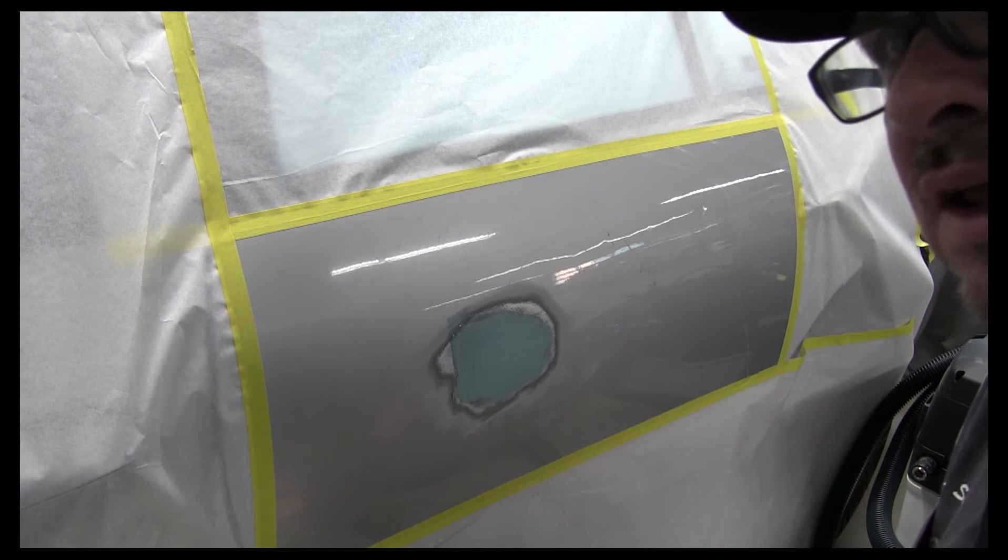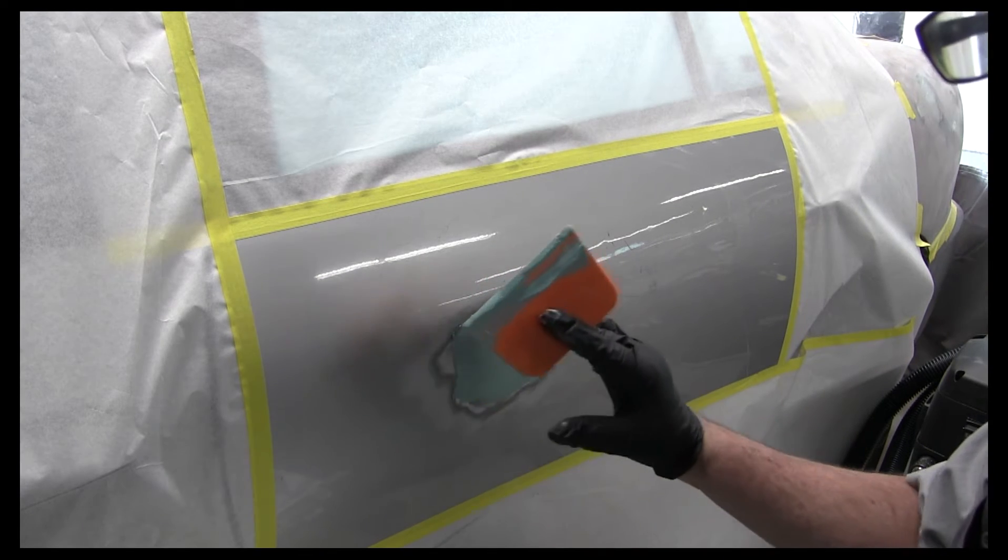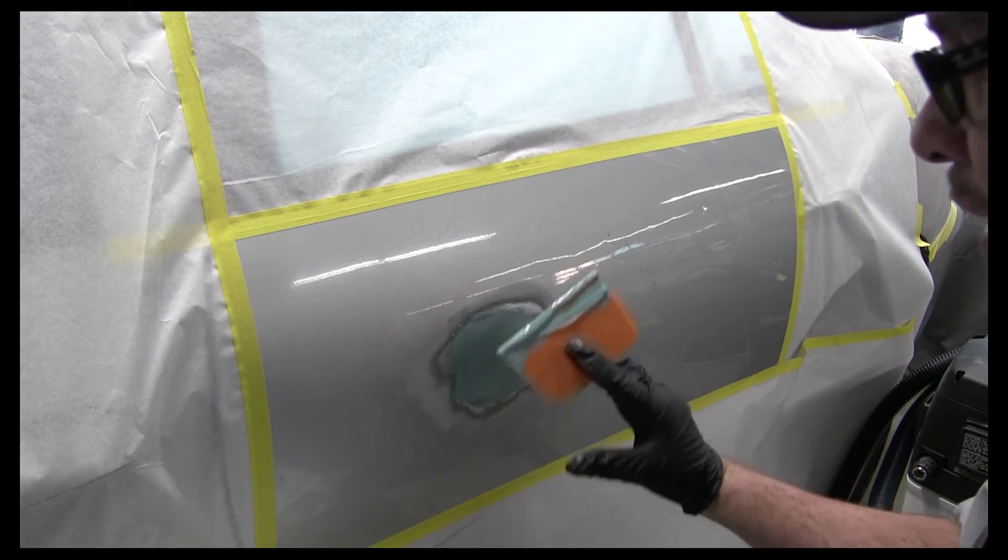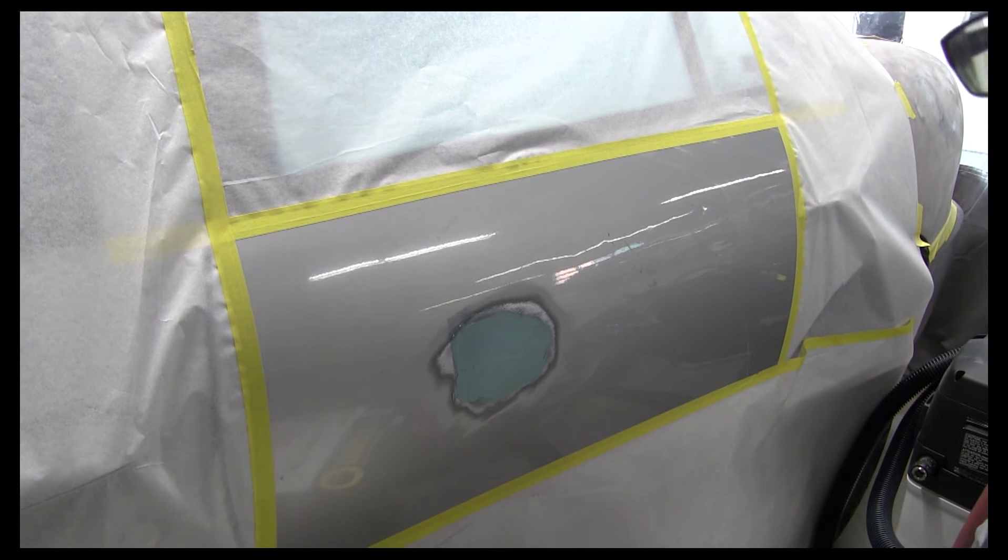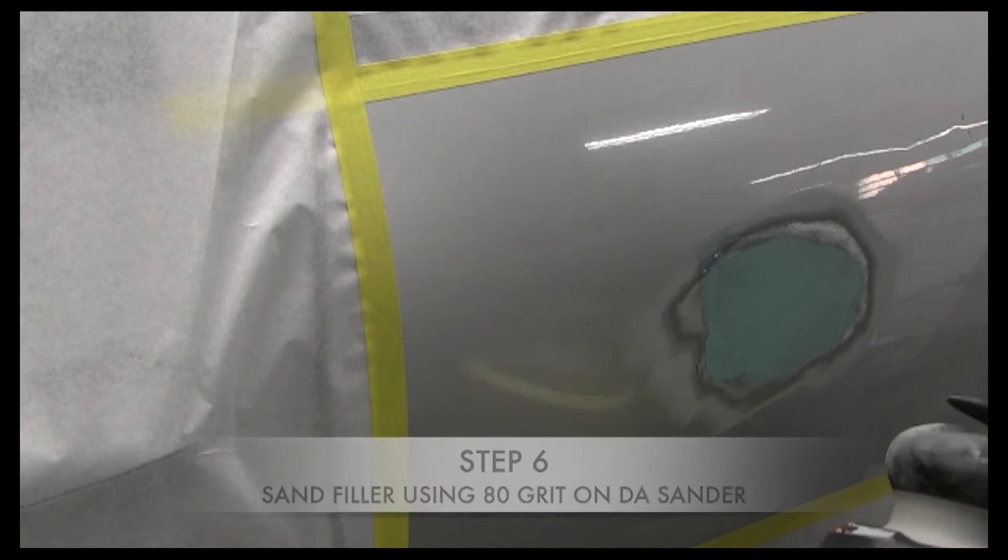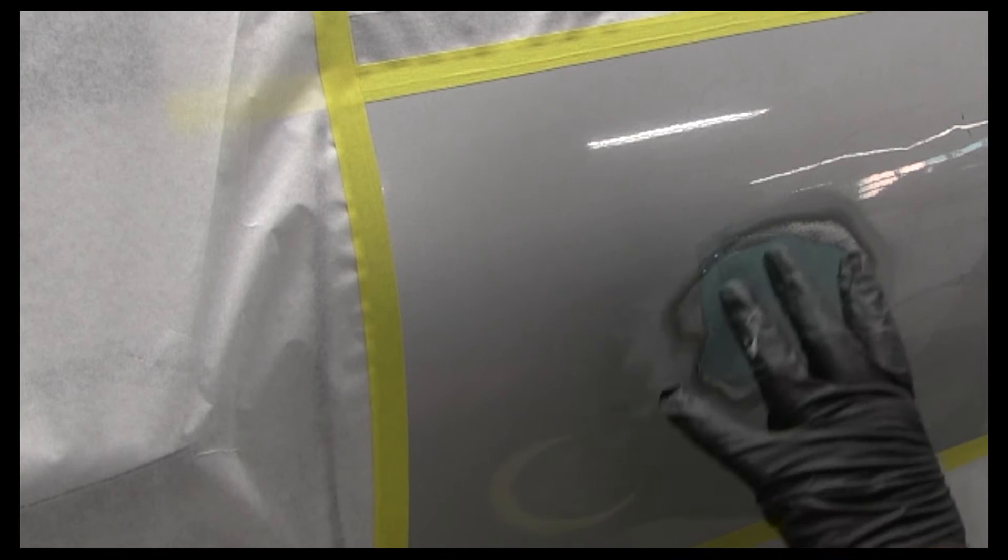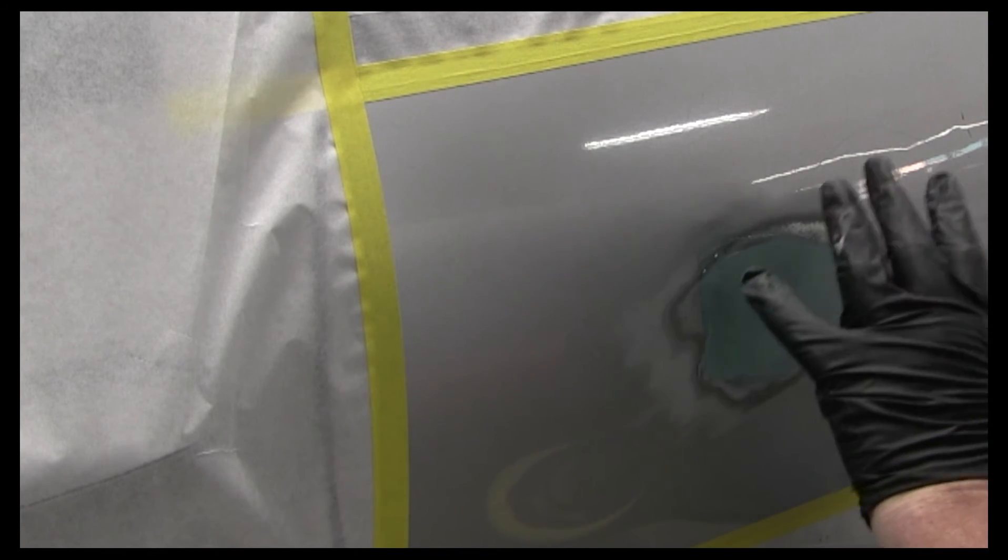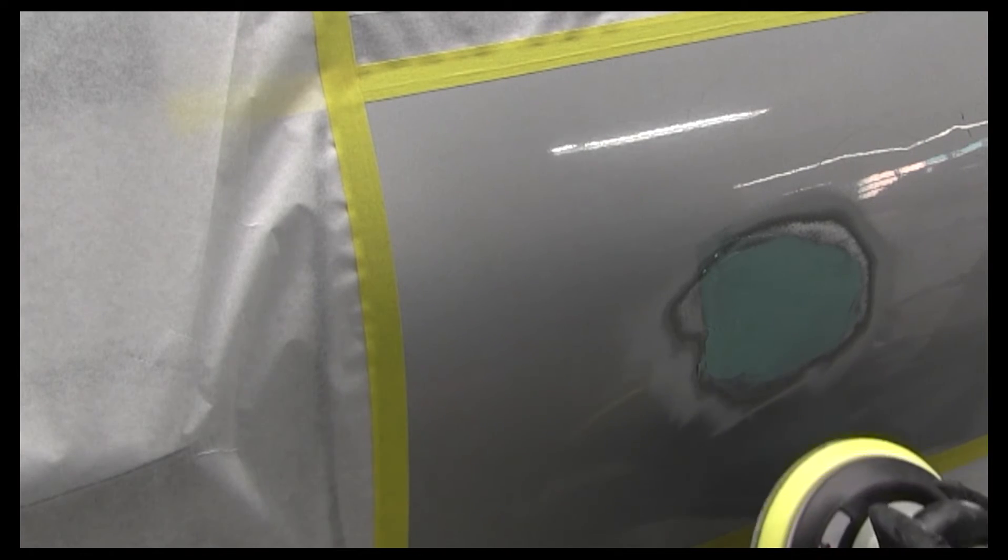I'm going to let that dry. And then I'm going to use the DA sander with some 80 to kind of stay in this area just to level it a little bit. And then I'm going to go over it with some 180 to minimize the 80 grit scratches. I've allowed that to harden up and I'm going to get the same piece of 80 grit that I was using and put it back on the sander. With the 80 grit, I'm just going to barely level this. You don't want to sand too much off, but I'm just going to kind of get some of the highs off and then I'll switch to 180.